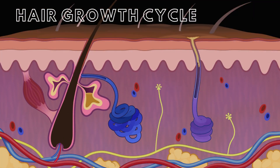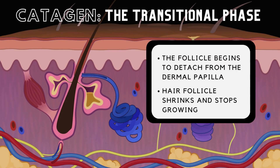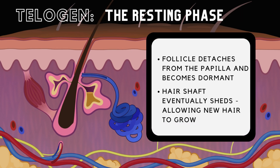The hair growth cycle comprises three phases. Anagen, the growth phase — cells are actively dividing, which causes continuous hair growth. Hair remains in this phase for approximately two to seven years. Catagen, the transitional phase — the follicle begins to detach from the dermal papilla, causing the follicle to shrink and stop growing. Telogen, the resting phase — the follicle completely detaches from the papilla, causing it to become dormant. Eventually, the hair will shed, leaving room for new hair to grow.